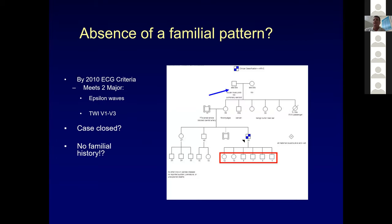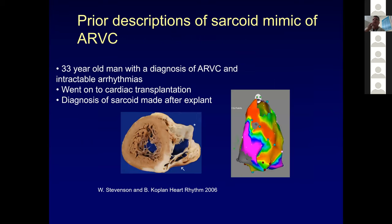We looked at the family history and there's nobody with arrhythmogenic cardiomyopathy, however there is a family member who had sarcoid, and they're down here in South Carolina in the sarcoid belt. We have not identified a genetic susceptibility locus, but there can be familial clusters. There's a prior description by Bill Stevenson and Bruce Copeland of sarcoid mimics of ARVD — a 33-year-old with ARVD and intractable arrhythmias who ultimately underwent transplant, and it wasn't until after transplant they found granulomas — it wasn't ARVD at all.